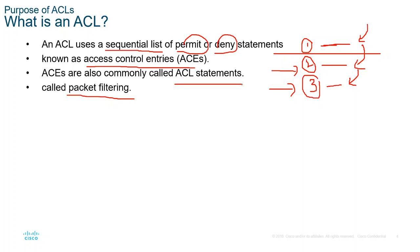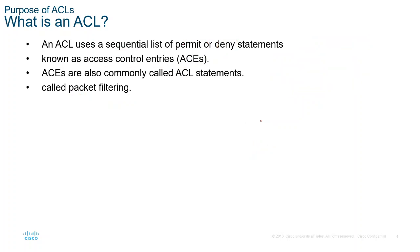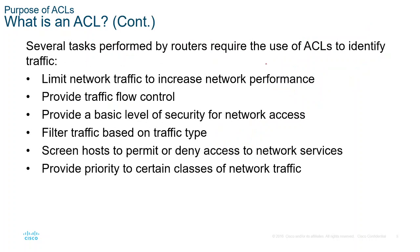We call each line an ACE — Access Control Entry — or we also call it an ACL statement. Both terms refer to the same thing: access control entries or ACL statements.